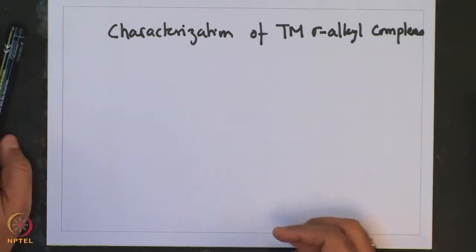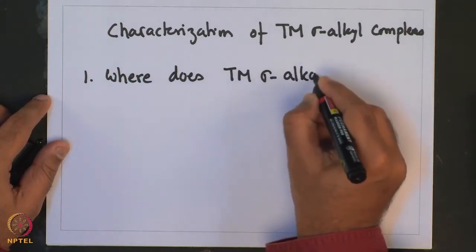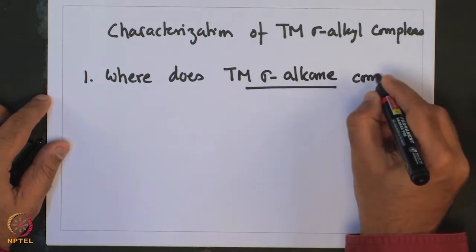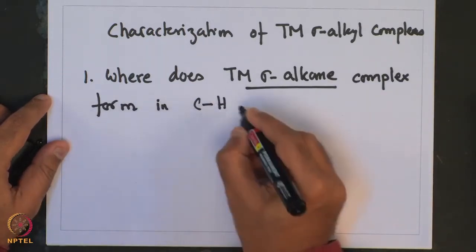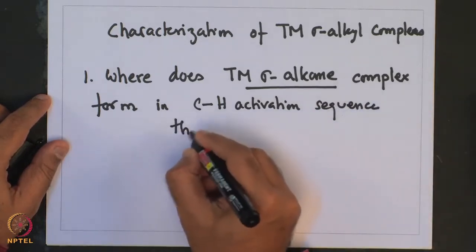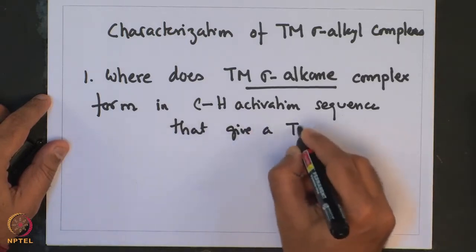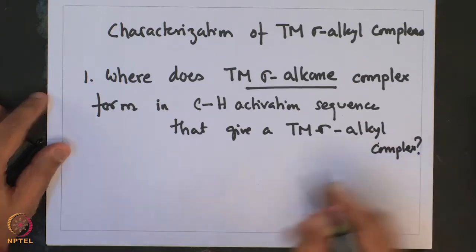What is important to note is that in the course of C-H activation, the question arises: where does the Transition Metal-Sigma alkane complex occur, and does it precede the oxidative addition step? So the first question one asks is: where does the Transition Metal-Sigma alkane complex occur and does it precede the C-H activation sequence that gives a Transition Metal-Sigma Alkyl complex?